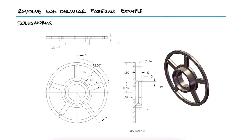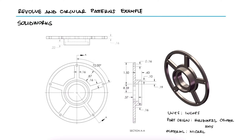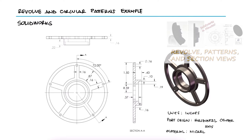Use these part drawings to build the parts shown in SOLIDWORKS. Unit system: Inches. Part origin: Horizontal Center Axis. Material: Nickel. This is the first example for the Revolve in Patterns main video. The link to that video and other examples and lectures are found in the description below.